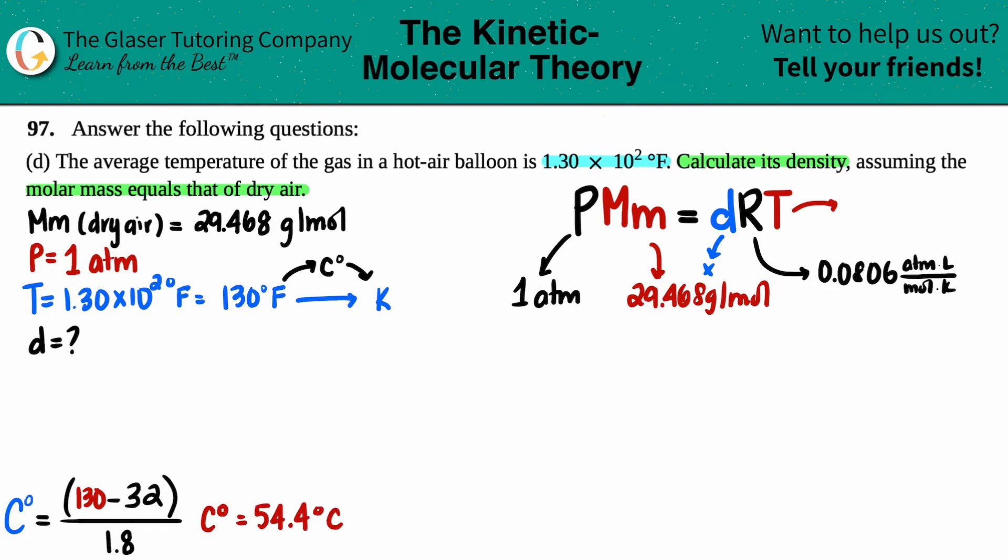So I'm just going to say 54.4 degrees Celsius. And then from there we could easily just convert to Kelvin, right? Celsius to Kelvin, all we do is plus 273. So plus 273. We'll say 327, right? 327.4. So I'll just put that answer right here. 327.4 Kelvin.